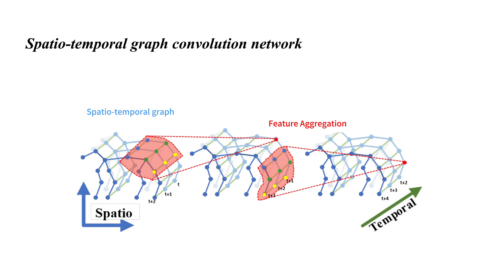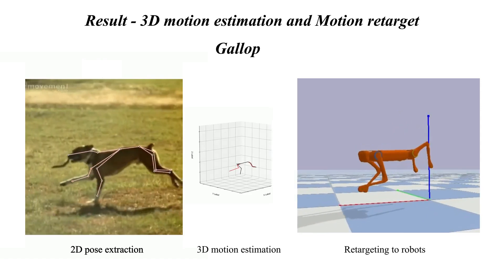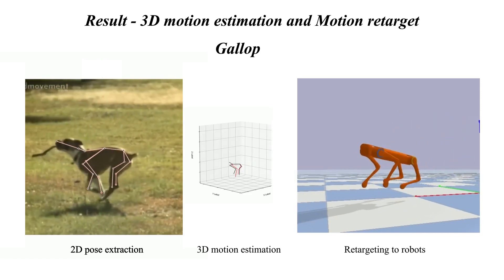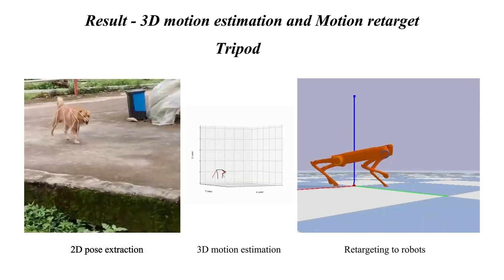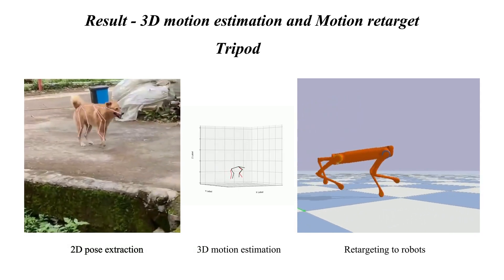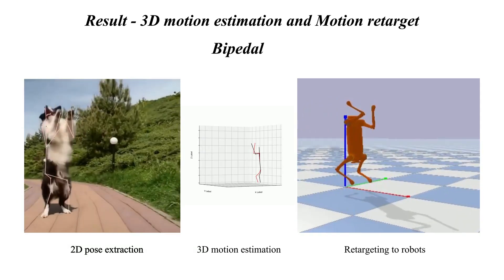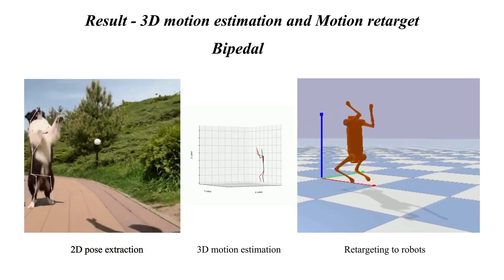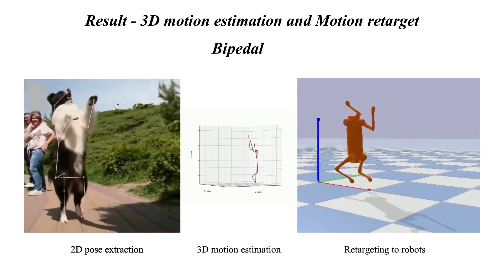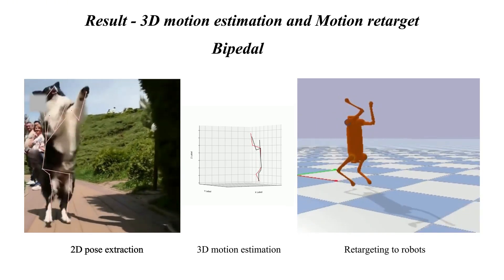We introduce a spatial-temporal graph network to aggregate the features of the graph and reconstruct the 3D pose of animals. This approach eliminates the need for motion capture devices and enables the capture of diverse and flexible motion data for quadrupeds. Notably, the model demonstrates the ability to generalize to previously unseen bipedal and backflip motions.